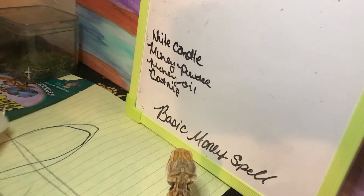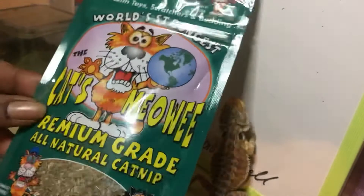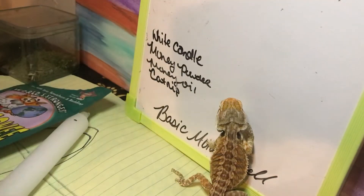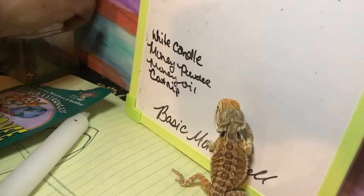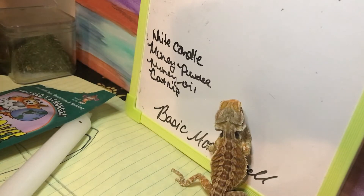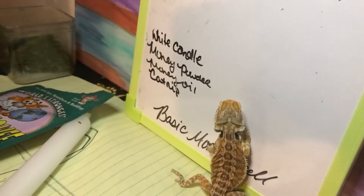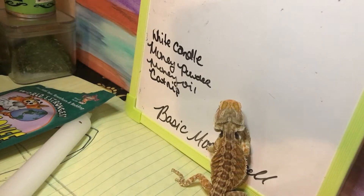Some simple things that you're going to need: a white candle, unused; some catnip; ground cinnamon, if you have it; a prosperity mix — I have like 13 different herbs in mine; some glitter. If you don't have your own prosperity mix, you can use some money drawing powder.